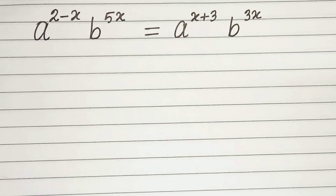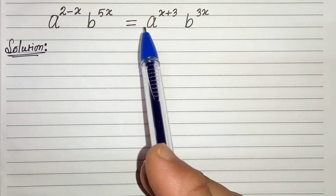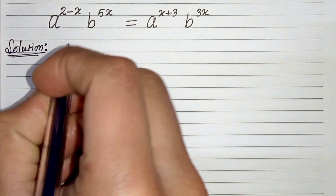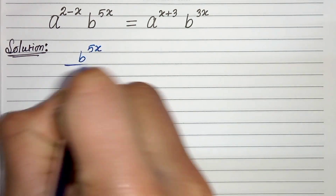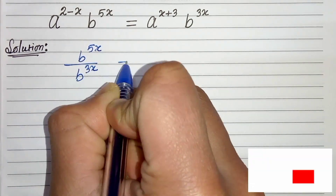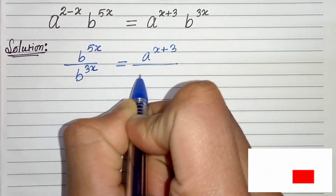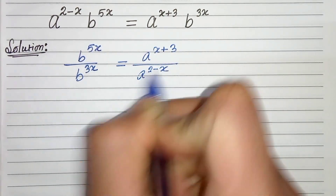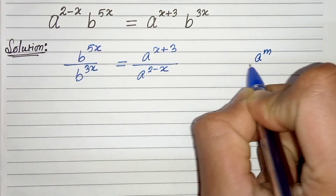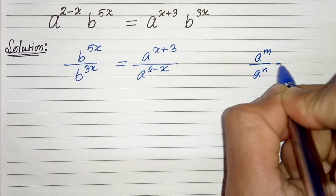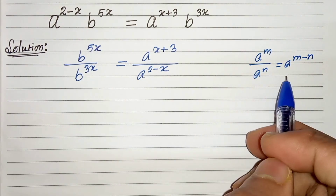So let's start. First of all, let's take this b to the left hand side and this a to the right hand side. So we will get b to the power 5x divided by b to the power 3x equals a to the power x plus 3 divided by a to the power 2 minus x. And we know from the exponential property that a to the power m divided by a to the power n can be written as a to the power m minus n. So let's apply this property here.